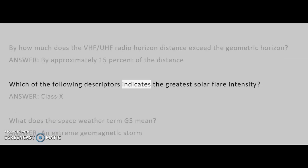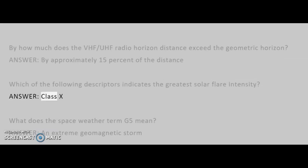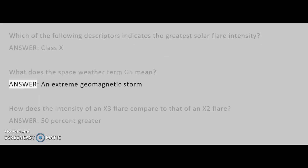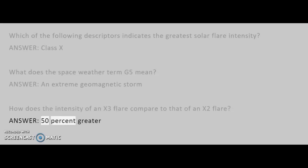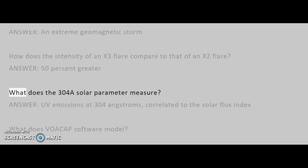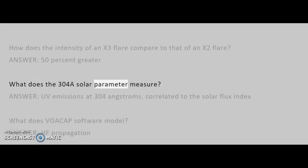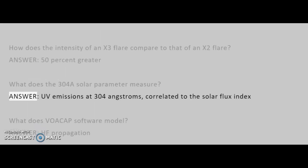Which of the following descriptors indicates the greatest solar flare intensity? Answer: class X. What does the space weather term G5 mean? Answer: an extreme geomagnetic storm. How does the intensity of an X3 flare compare to that of an X2 flare? Answer: 50% greater. What does the 304A solar parameter measure? Answer: UV emissions at 304 angstroms, correlated to the solar flux index.